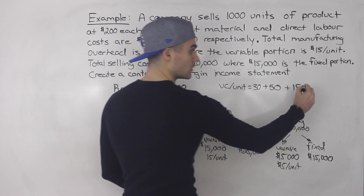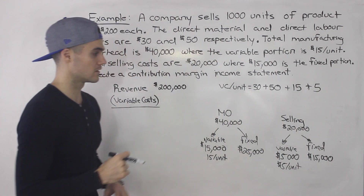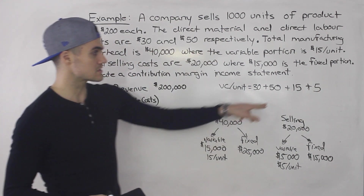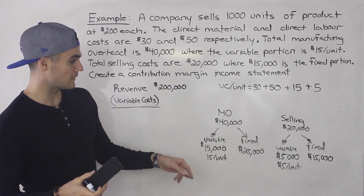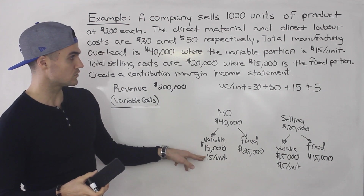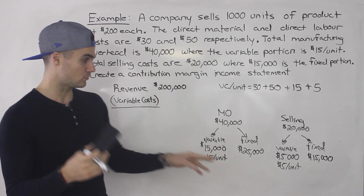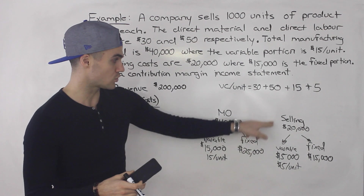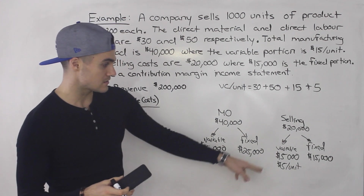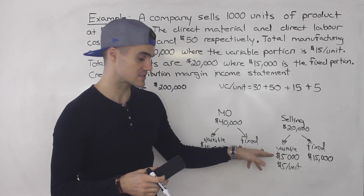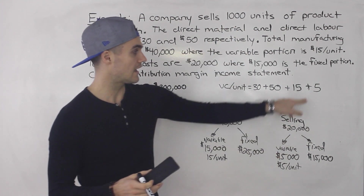That $5 per unit is part of the total variable cost per unit. Sometimes these numbers aren't given directly — you have to figure them out. With variable manufacturing overhead we were given $15 per unit directly. But for variable selling costs, we had to take total selling costs, subtract total fixed selling costs to get total variable selling costs, then divide by output to get the variable cost per unit.